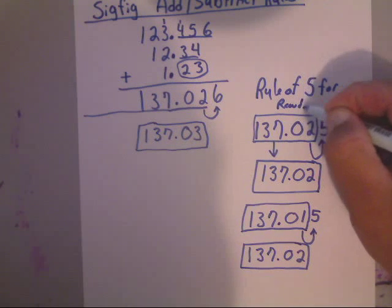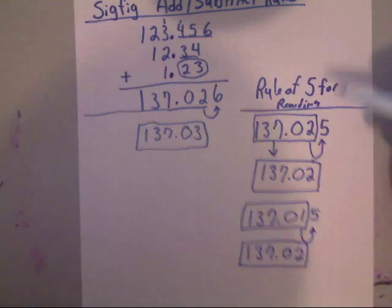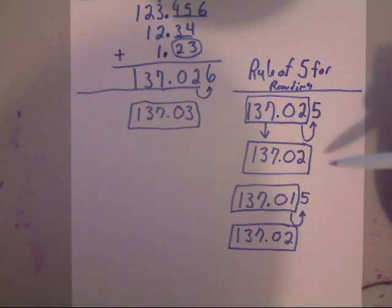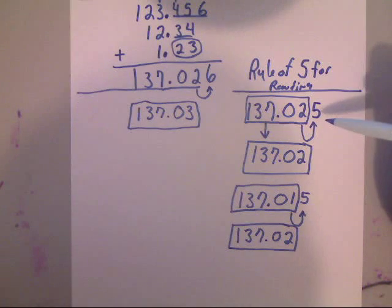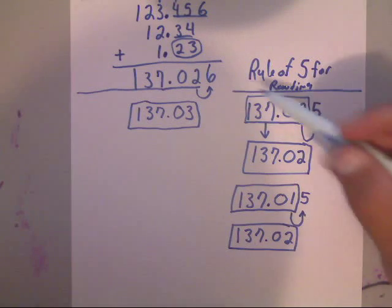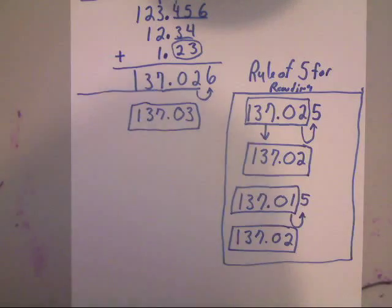The rule of five is weird, just get used to it, practice it. This is the only time I know this happens is in chemistry and physics. If the number to the right is five, then you round it up if it's odd to even, but if it's even leave it alone.